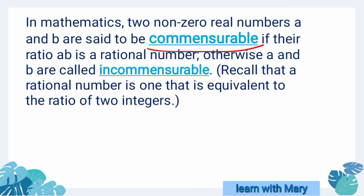Commensurable means common measure. In mathematics, two non-zero real numbers A and B are said to be commensurable if their ratio A to B is a rational number.